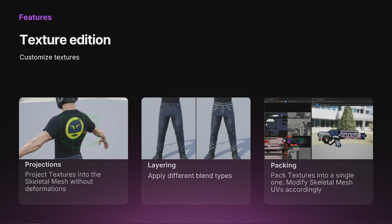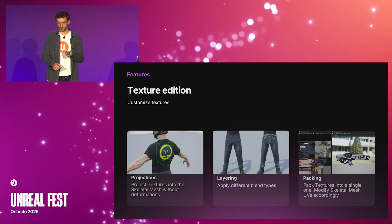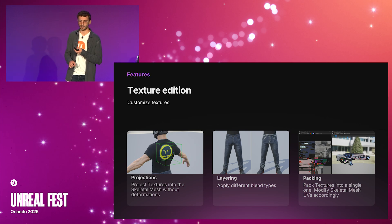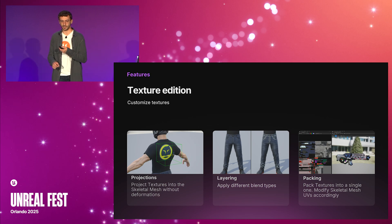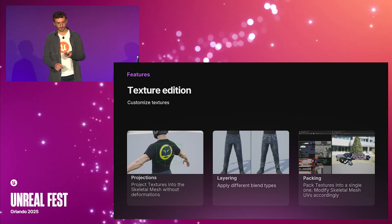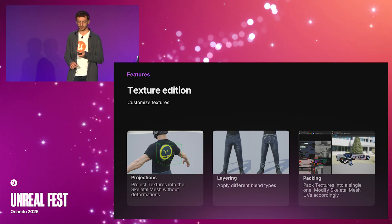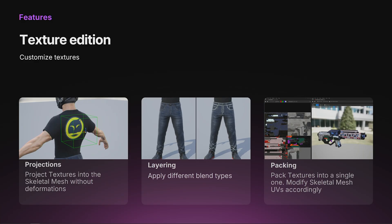With Mutable, you can not only edit meshes, but also edit textures. Some operations you can perform are: projections — where you can project textures onto others without the GPU cost — layering, where you can blend textures using different blend modes, and texture packing, which is done automatically when merging skeletal mesh sections.